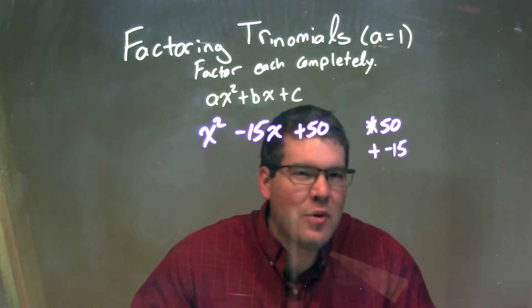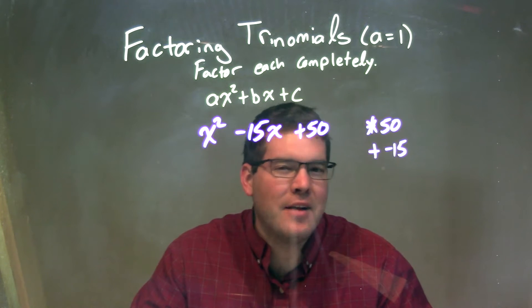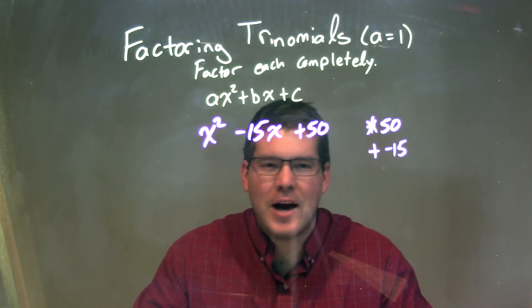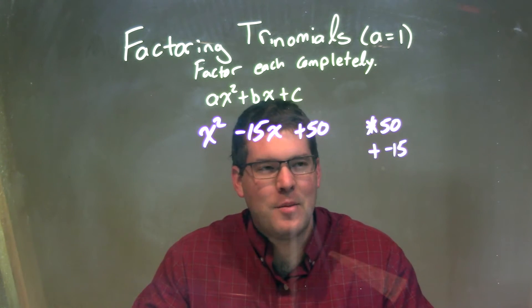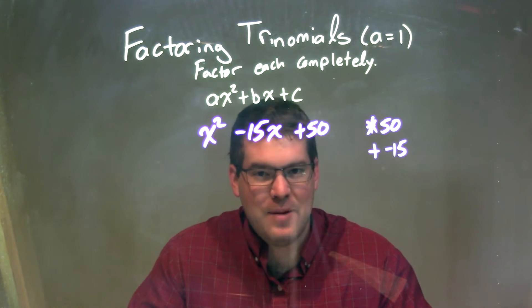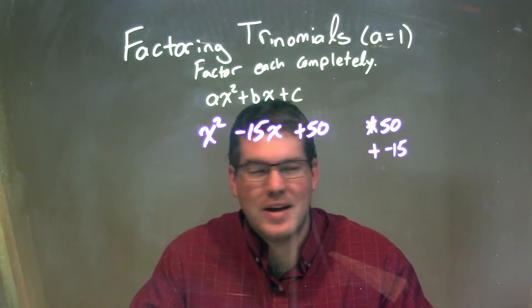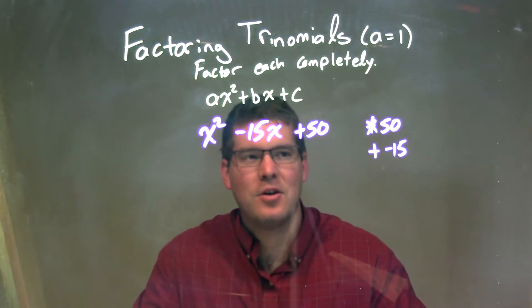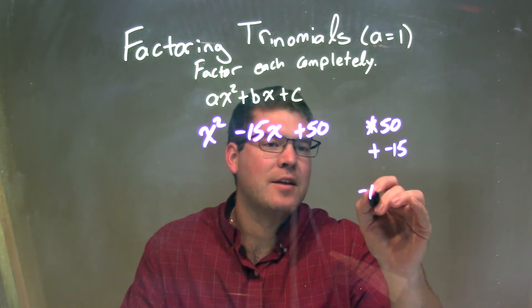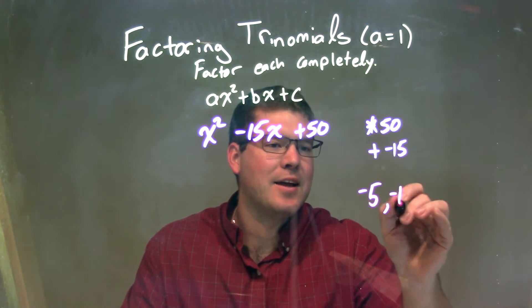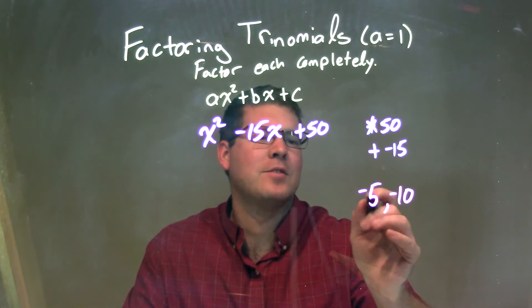So now I'm trying to think, what two numbers multiply to be 50 that might be near 15? Well, 50, I instantly always think, that's just how my brain works I guess, 5 times 10. And luckily I know 5 plus 10 is 15, so how can I make it work out? Well, negative 5 and negative 10, that's a 5 with a big Frankenstein head.